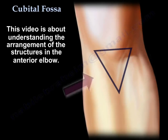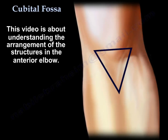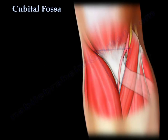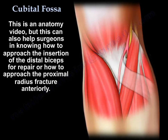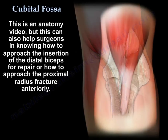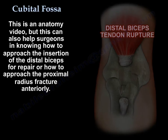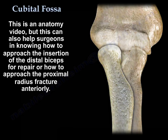This video is about understanding the arrangement of the structures in the anterior elbow. It is an anatomy video, but it can also help surgeons in knowing how to approach the insertion of the distal biceps for repair, or how to approach the proximal radius fracture anteriorly.